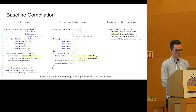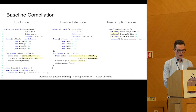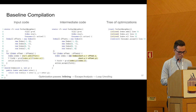First, we simply inline the calls to methods that are easily inlineable — like the call to the add method, X and Y, and method add. We simply replace the calls with the body of the target method, and in the tree on the right we record these optimizations. You can see that for these three calls it says 'inlined' because we inlined these calls.